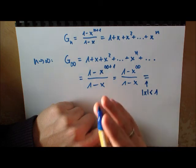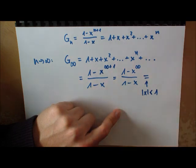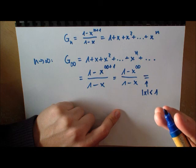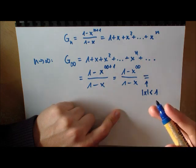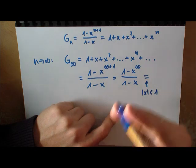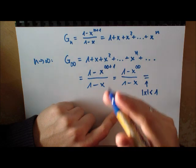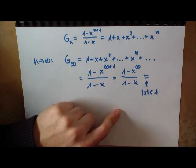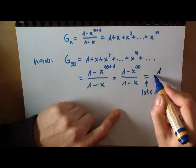If you take 1 half and multiply, what 1 half to the infinity means is take 1 half and multiply it with itself. 1 half times 1 half will give you 1 over 4. Again multiply with 1 half will give you 1 over 8, 1 over 16, and you can continue on.